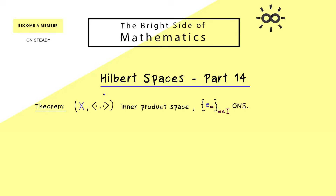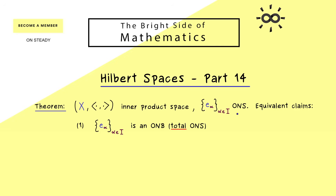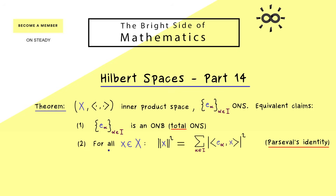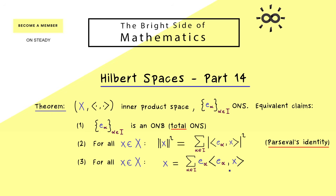Then without further ado, let's recall the statement from the last video, where we have an inner product space X and an orthonormal system e_alpha. We get four claims which are all equivalent. The first one says we have a total ONS, so actually an ONB. The second one is Parseval's identity, which is simply Bessel's inequality with equality. The third one tells us that every vector x in X can be expanded with respect to the ONS.